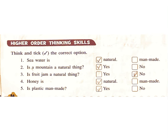Higher-order thinking skills. Think and tick the correct option. 1. Sea water is — natural or man-made? Answer: natural. 2. Is a mountain a natural thing? Answer: yes. 3. Is fruit jam a natural thing? Answer: no. 4. Honey is — natural or man-made? Answer: natural. 5. Is plastic man-made? Answer: yes.